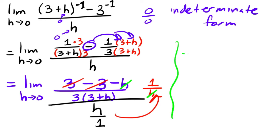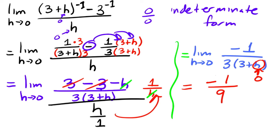And so what you're left with is that this is equal to the limit as h approaches zero. On top, you're just left with a negative one, and then over three times three plus h. And so notice now that if you plug in zero in for this guy, you're just left with negative one over three times three, which is nine. And that's it.